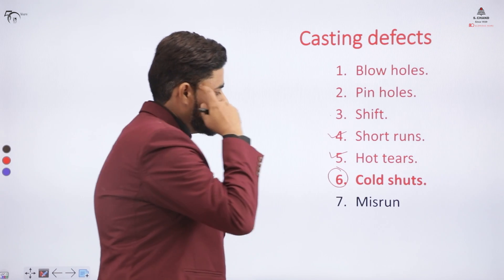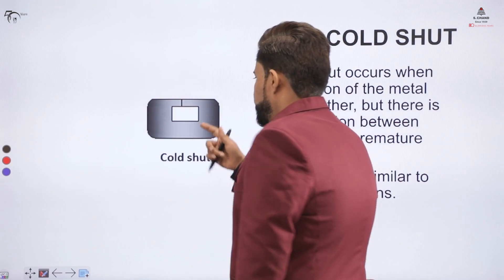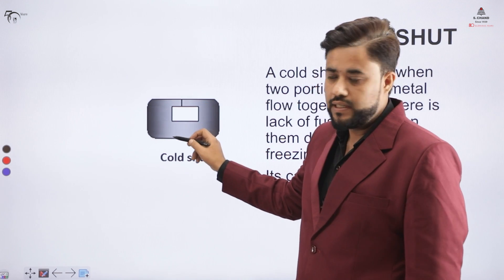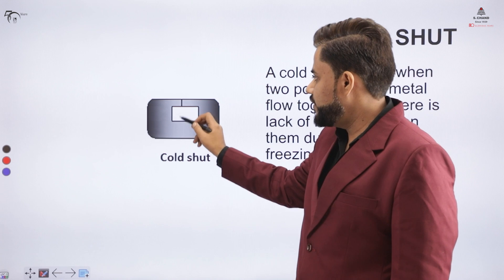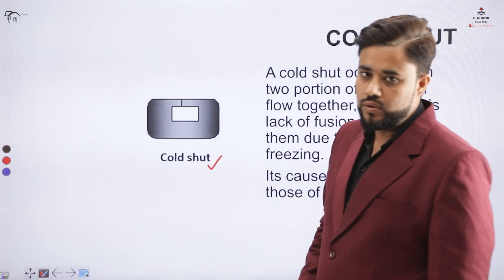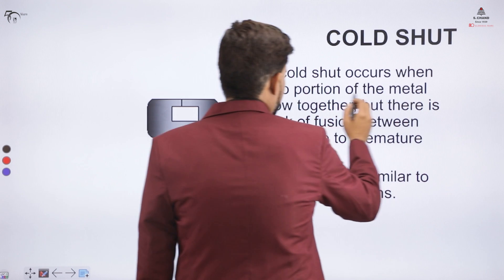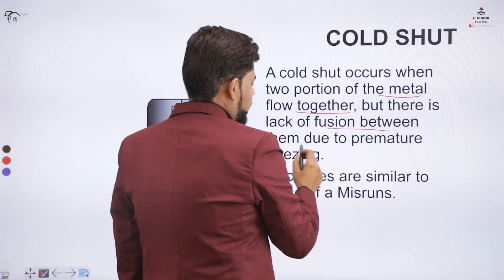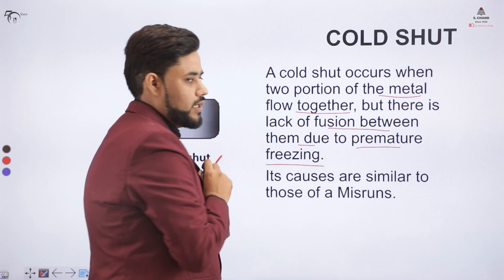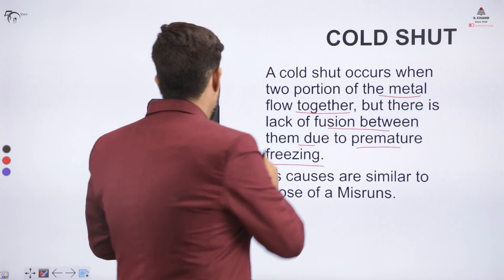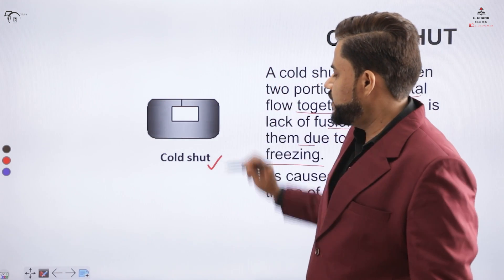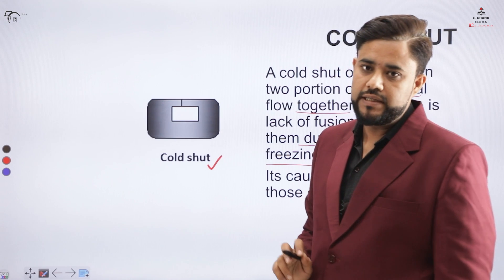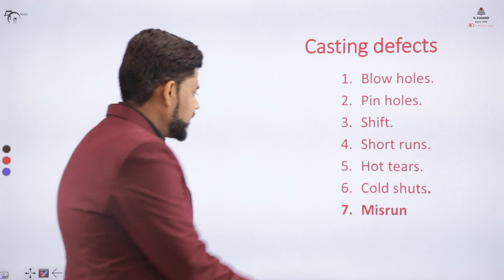Next we cover cold shut. As seen in the diagram, when metal is poured and does not fill the cavity completely, it leads to a cavity creation — that is a cold shut defect. Cold shut occurs when two portions of metal flow together but there is a lack of fusion between them and premature freezing occurs before the entire cavity is filled.